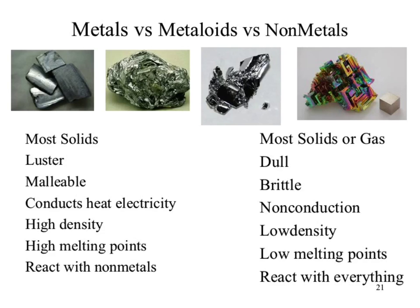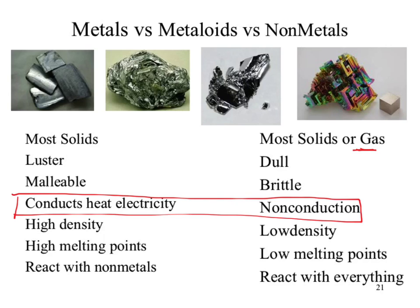Then we can look at densities, melting points, and reactivities. When we look at reactivities, we now have to run a chemical reaction. Those are our general classifications. The biggest differences you might need to retain would be the phase differences and the conduction difference. Conducting heat and electricity becomes important — we'll talk about the ability for a material to conduct heat in a general sense later in the semester.